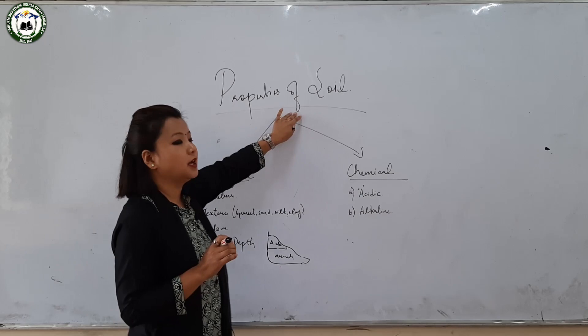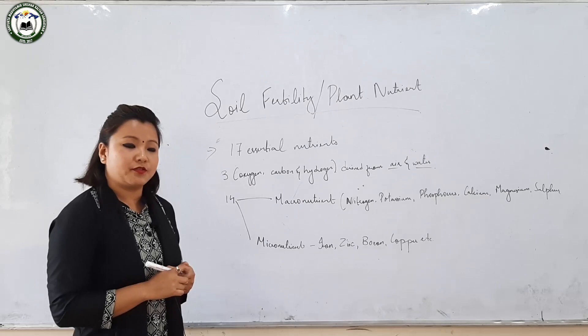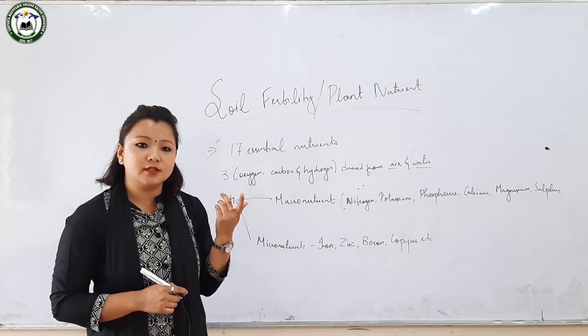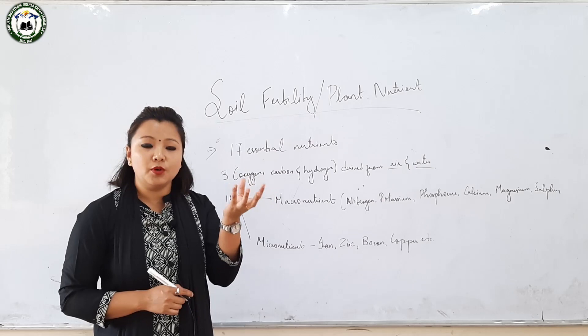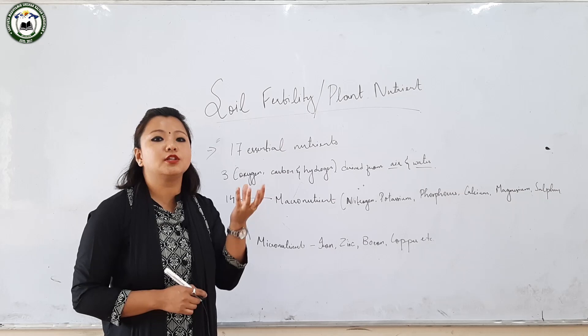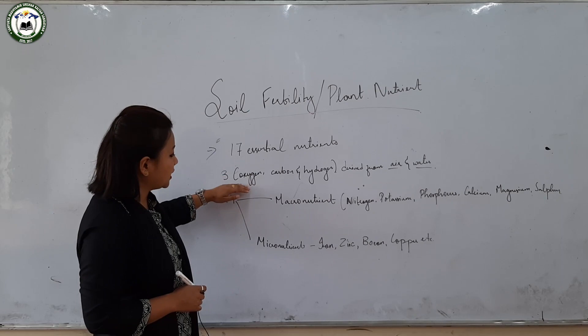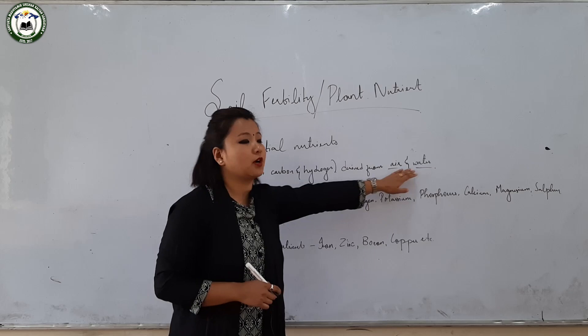Now moving on to soil fertility and plant nutrients. It is very essential to understand soil fertility and plant nutrients while studying soil, because soil is regarded as the medium for plant growth. A plant needs to grow under certain conditions, and the soil needs several essential nutrients. Nutrients can be categorized into 17 parts derived from several sources. The three essential nutrients — oxygen, carbon, and hydrogen — are derived from air and water.